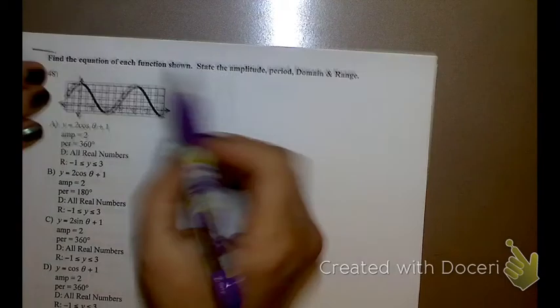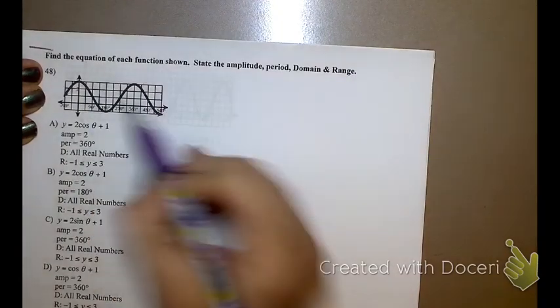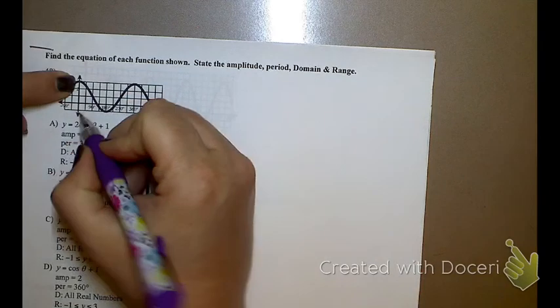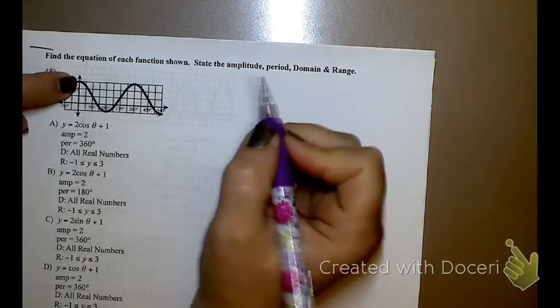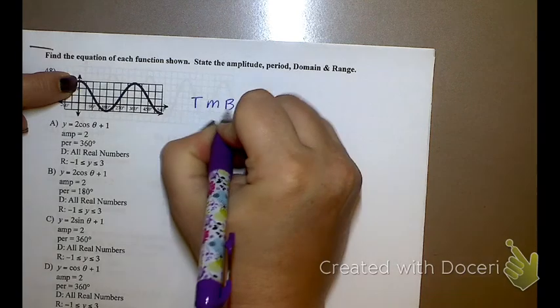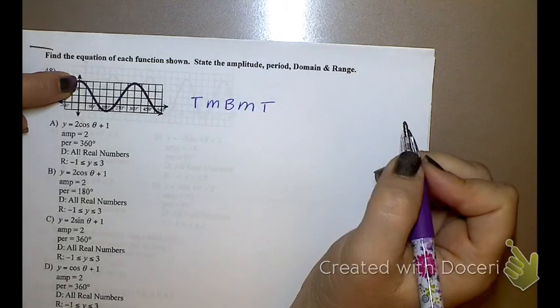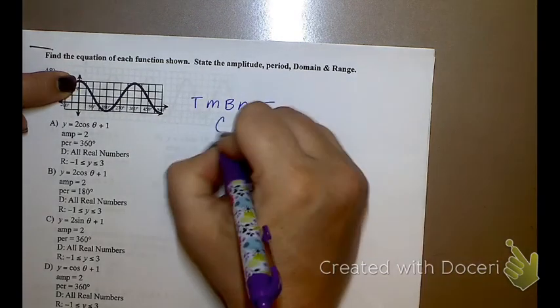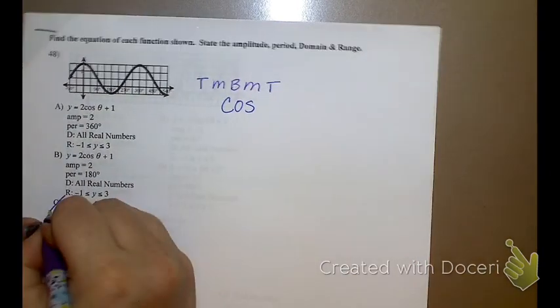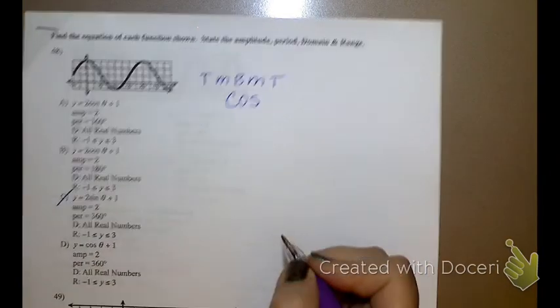So this one says find the equation of the function shown. Notice that it starts on the y-axis at the top. That means I have a top, middle, bottom, middle, top. What does that tell me about my equation? It is cosine. So this one's cosine. That one's cosine. This is sine. That one's cosine. So I've eliminated C as a possibility.